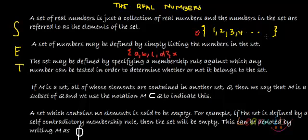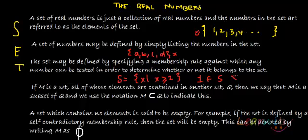A set may also be defined by specifying a membership rule, against which any number can be tested to determine whether it belongs to that set or not. For example, I can define a set of all numbers greater than or equal to two. If I ask whether one belongs to this set S, the answer is no, because one is not greater than or equal to two.